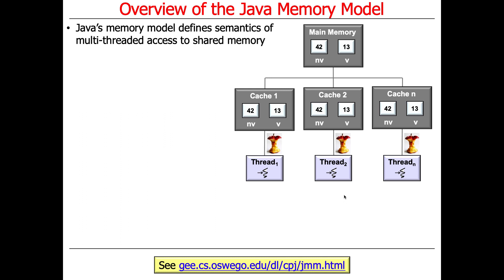This is kind of the way things look in modern computer systems. You have some main memory, you have some processor cores, each of which has its own cache. Threads, of course, run on the processor cores. And as they do work, typically they will be storing, reading, and writing data from the cache. That's very important to remember.